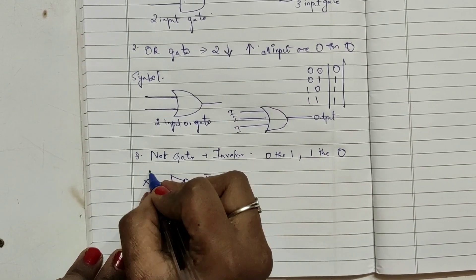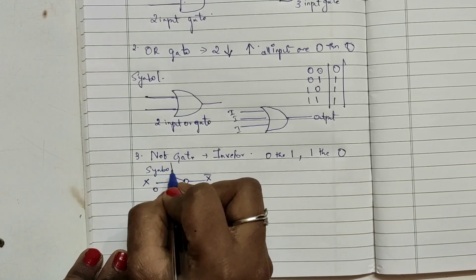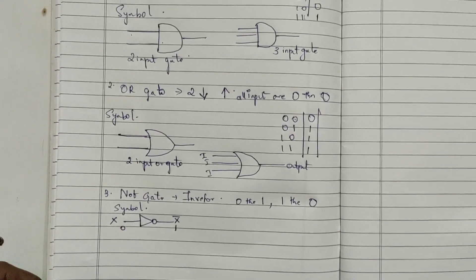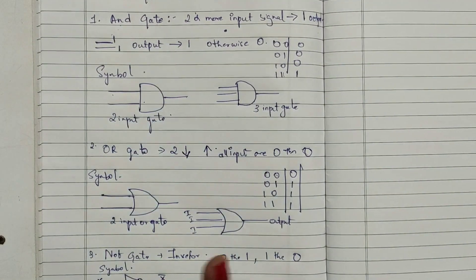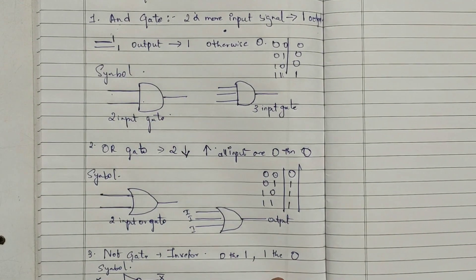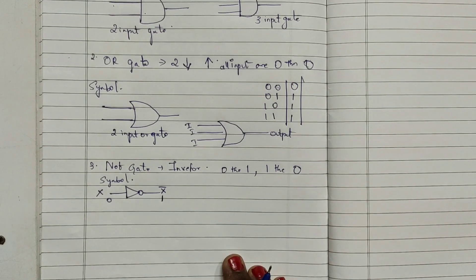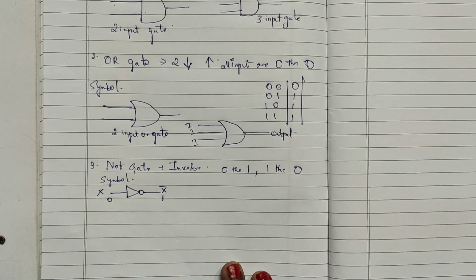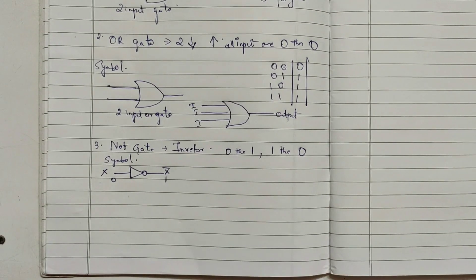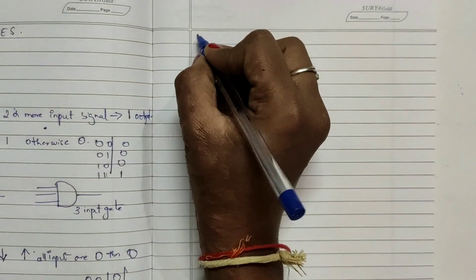To summarize: AND gate has two or more input signals where both inputs must be one for the result to be one; otherwise it is zero. For OR gate, all inputs must be zero for the result to be zero; otherwise it is one. NOT gate is simply the complement — if it is zero it will be one, and if it is one it will be zero.